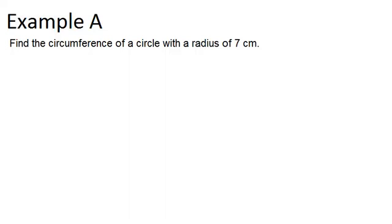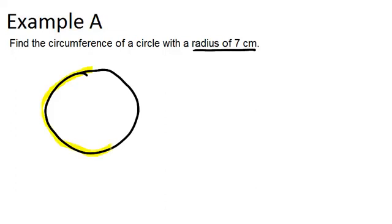In example A, it says to find the circumference of a circle with a radius of 7 centimeters. Remember that for a circle, the circumference is the distance around the circle, so it would be this distance.